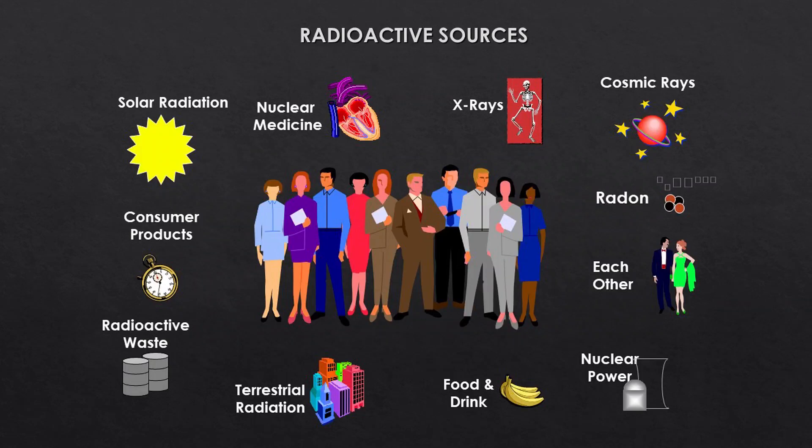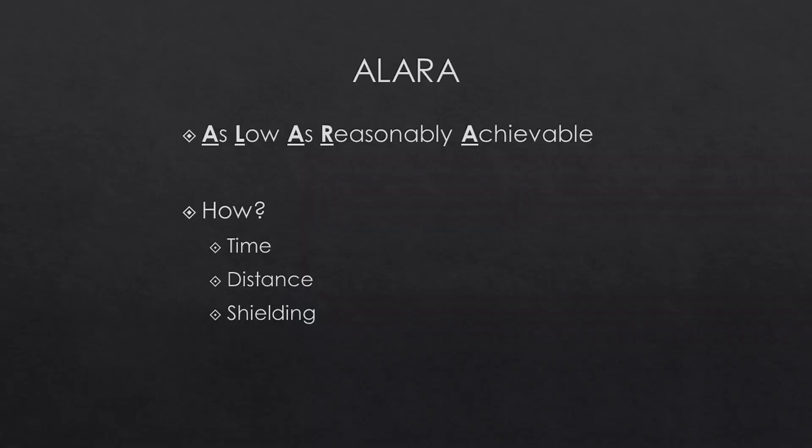There are radioactive sources all around us, including nuclear medicine, x-ray, cosmic radiation, nuclear power plants, food, radioactive waste, and some consumer products actually have radiation in them as well.